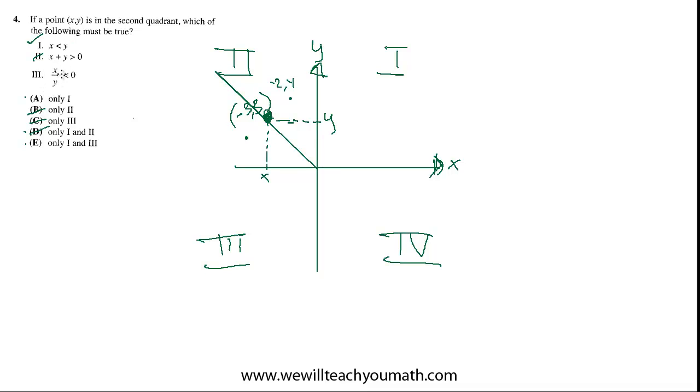And 3, x over y is less than 0. So is that always going to be true? Well, we know that anywhere in the second quadrant, x is always going to be negative, y is always going to be positive. So the quantity x over y is always going to be a negative over a positive, which can only ever be negative, which is to say that it's less than 0. So 3 is in, and E is the best choice.